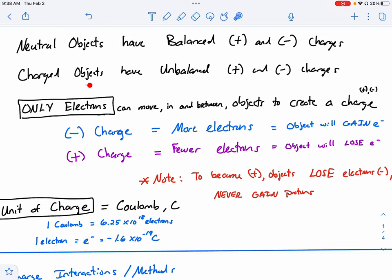Charged objects on the other hand have an unbalance. So therefore there might not be an equal number of positive and negative charges. Now here's the thing. In order to create that imbalance,